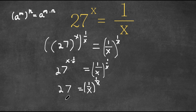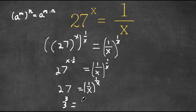I'm actually going to rewrite 27 as 3 to the power of 3, because 27 is 3 to the power of 3. And this is still equal to 1 over x to the power of 1 over x.